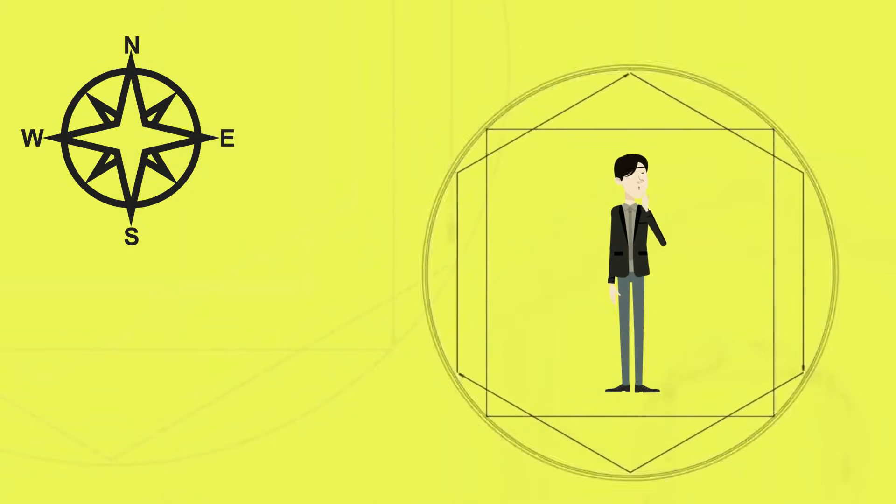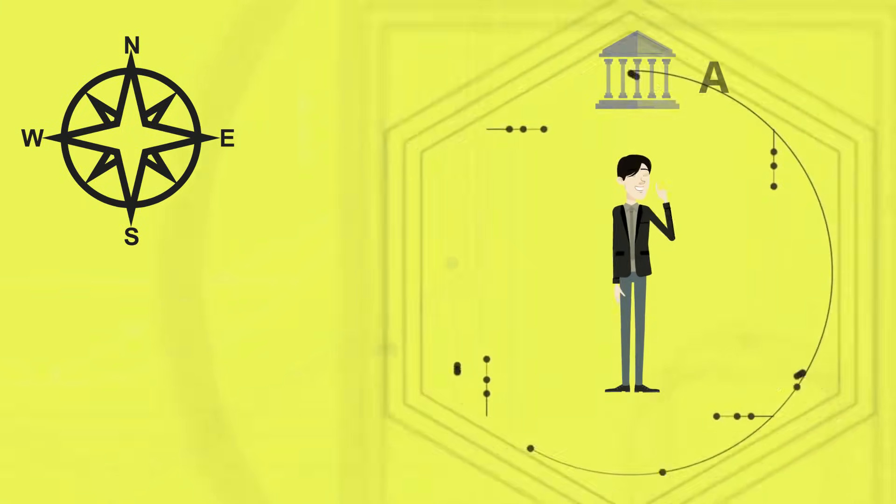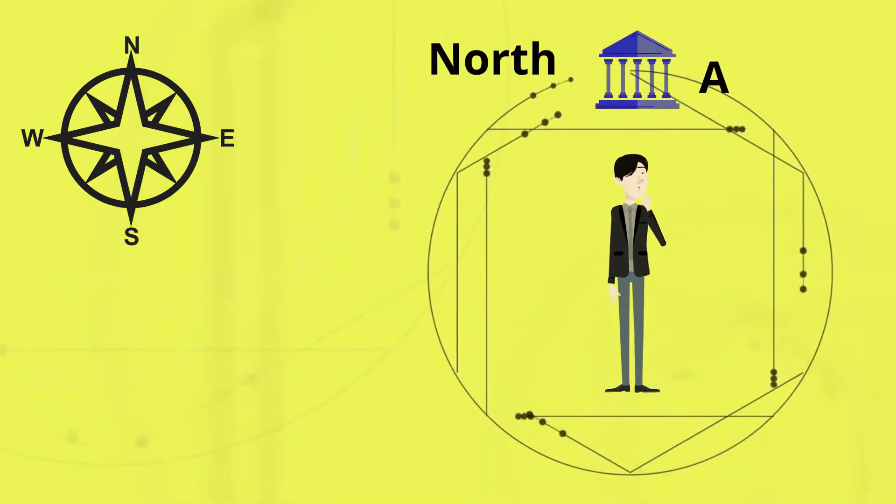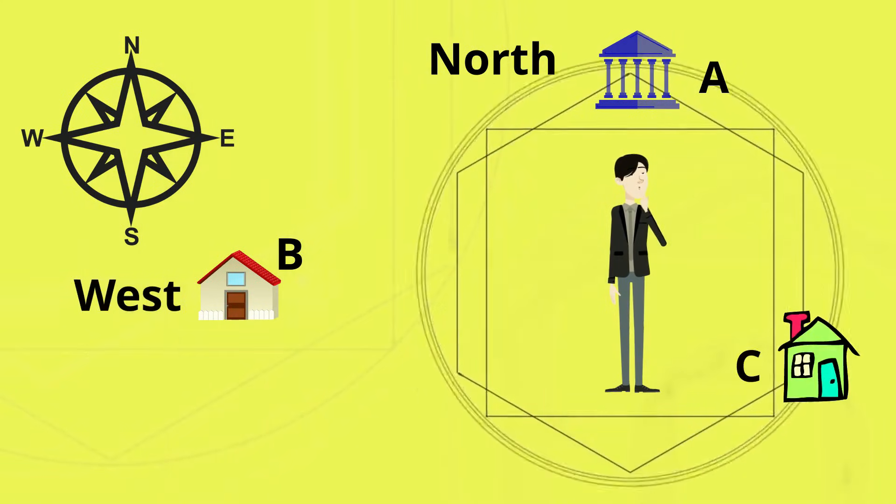From the vantage point of the human, let's provide directions to the following landmarks. For landmark A, you can use north. For B, you can use west. But what about C?